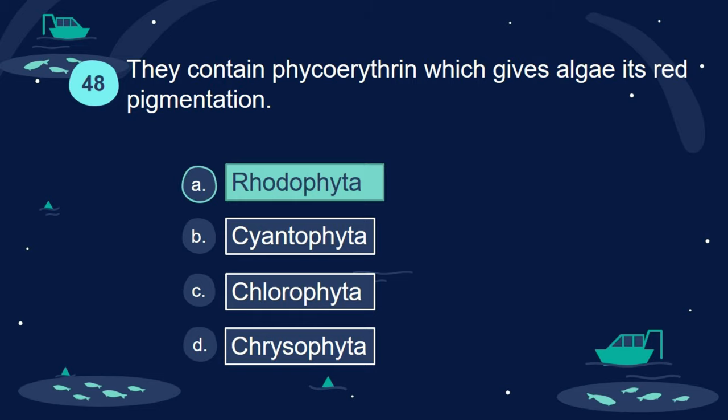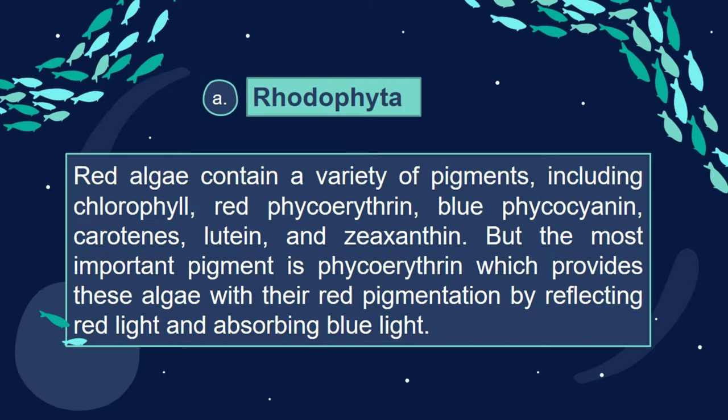Answer: A. Rhodophyta. Red algae contain a variety of pigments, including chlorophyll, red phycoerythrin, blue phycocyanin, carotenes, lutein, and zeaxanthin. But the most important pigment is phycoerythrin, which provides these algae with their red pigmentation by reflecting red light and absorbing blue light.